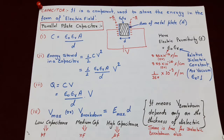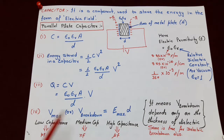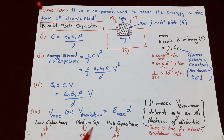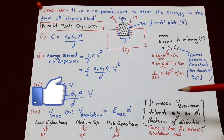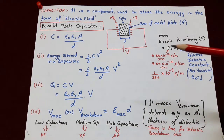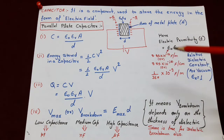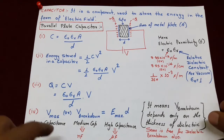Ab dekhiye, kisi bhi capacitor ki capacitance ki jo value hoti hai wo generally hundreds of picofarad se lekar hundreds of microfarad ki range mein hoti hai. Picofarad means 10 power minus 12, and microfarad means 10 power minus 6. Capacitance ki value agar picofarad ki range mein hai to use hum kahenge low capacitance; agar nanofarad ki range mein hai (means 10 power minus 9) to medium capacitance; aur agar microfarad ki range mein hai to high capacitance. This is all about parallel plate capacitor.